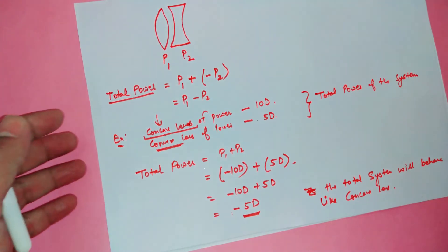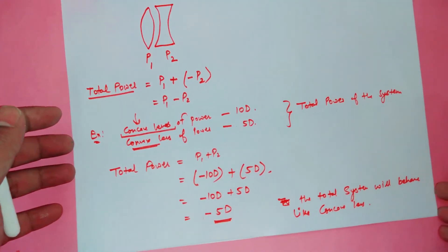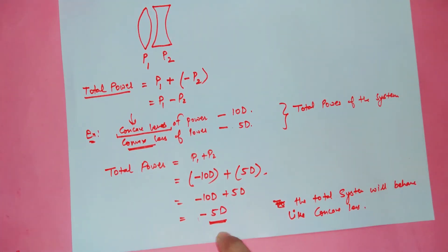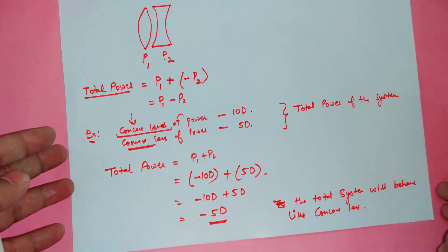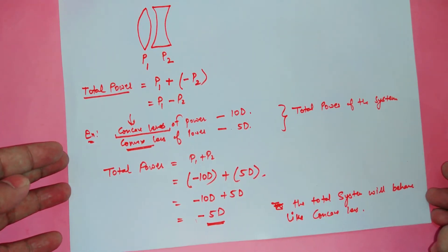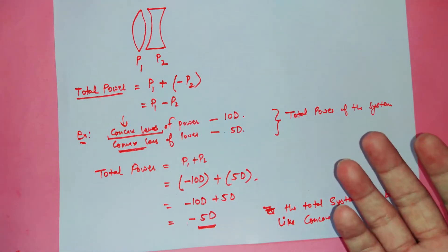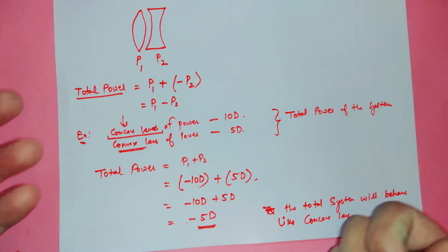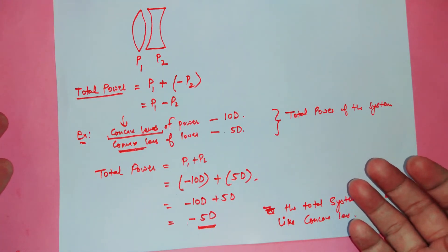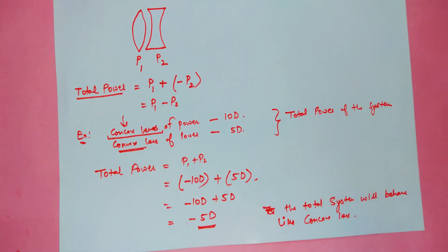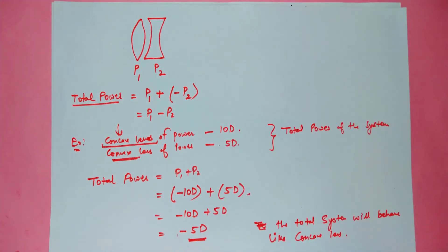Since the total power is -5 diopter (negative), the total system will behave like a concave lens. If the total power is positive, the whole system behaves like a convex lens. If the power is negative, the whole system behaves like a concave lens.